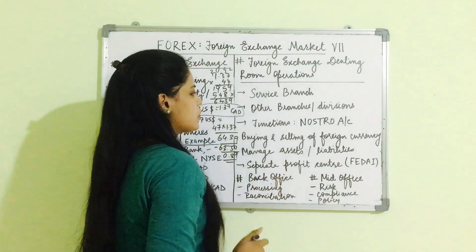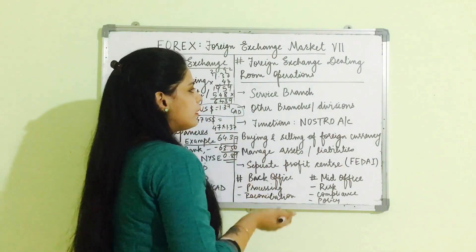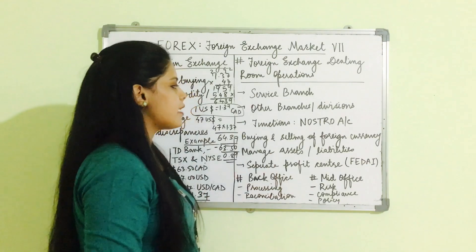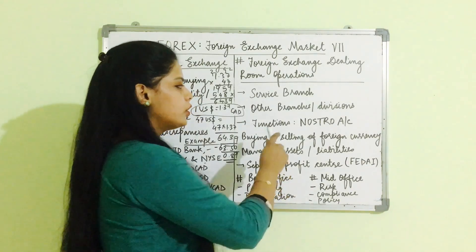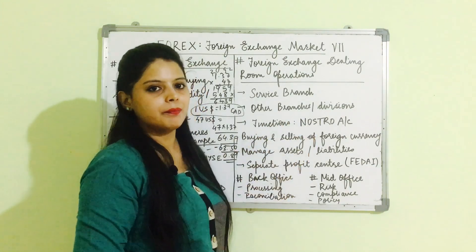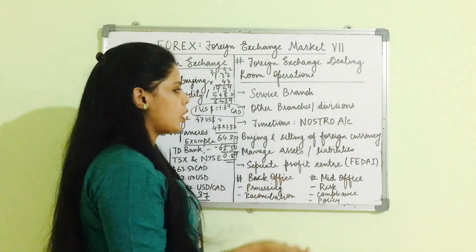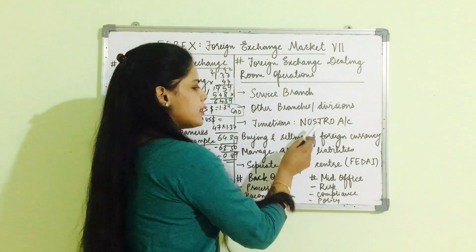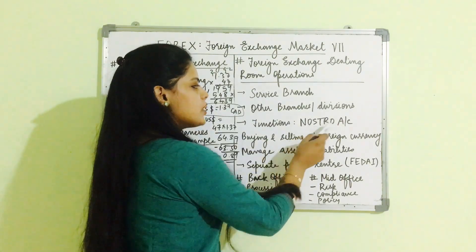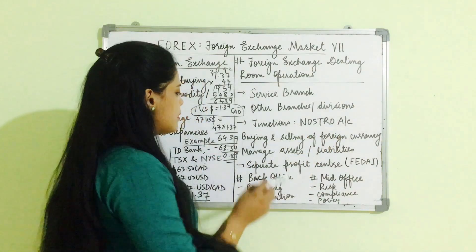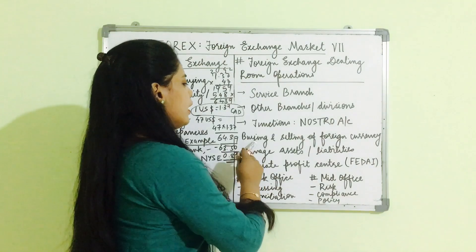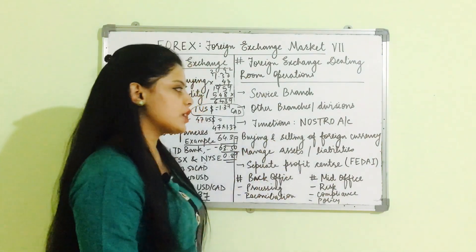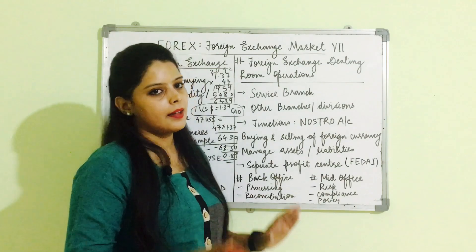The functions of the service branch are: to maintain the Nostro account — we will see what a Nostro account is in the next video. It also conducts and looks after the buying and selling of foreign exchange and foreign currencies.